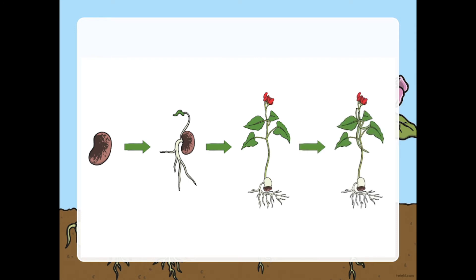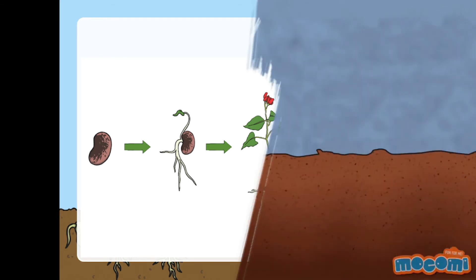So the seed grows, the plant produces a flower, and then the flower releases fruit. That is the plant growth cycle. That's all for our science class, students.